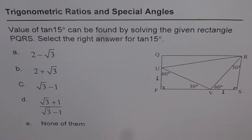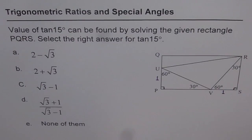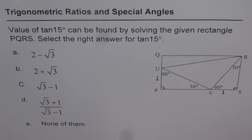Here is an interesting multiple choice question on trigonometric ratios and special angles. I would like you to copy the question, pause the video, solve and then check with my solution. The question is: the value of tan 15 degrees can be found by solving the given rectangle PQRS.